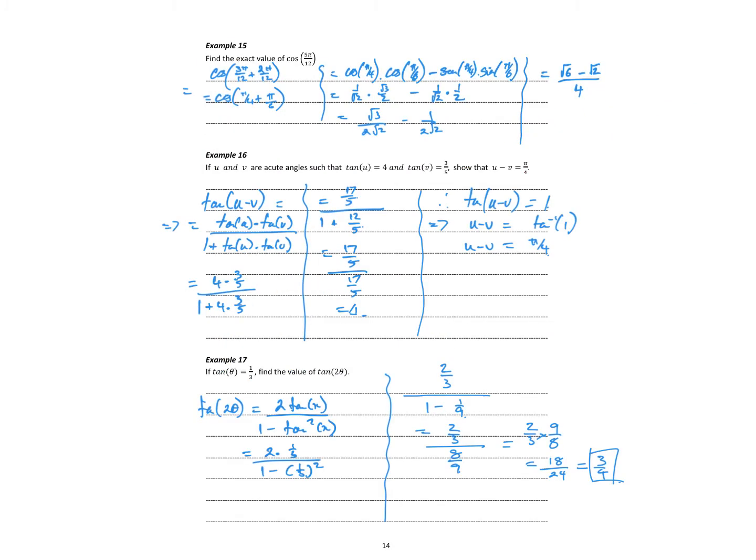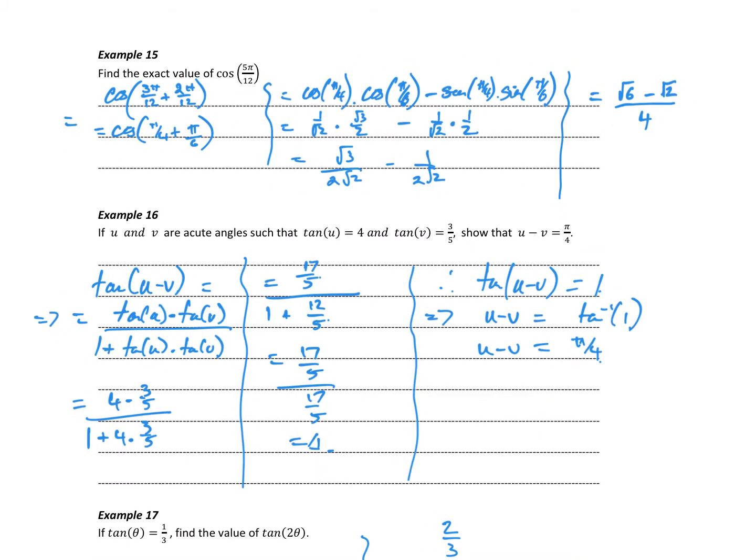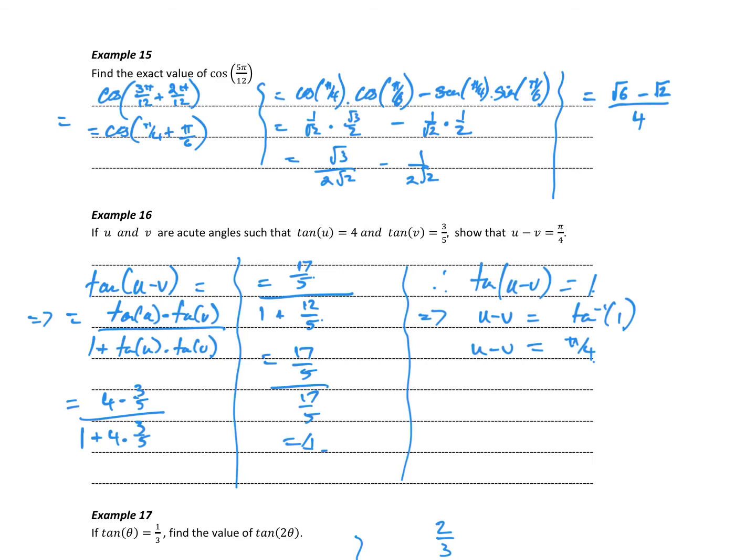Continuing that along, cos of 5π on 12. Sometimes it's a bit harder with the fractions. So 5π on 12 is 3 on 12 plus 2 on 12, which is the same as π on 4 plus π on 6. So for my cos expansion, it's cos cos opposite sine sine.